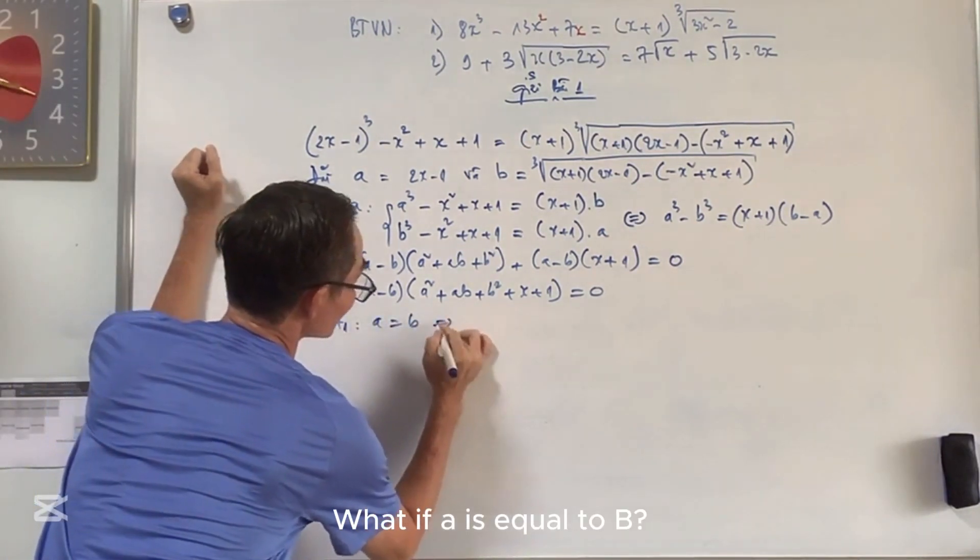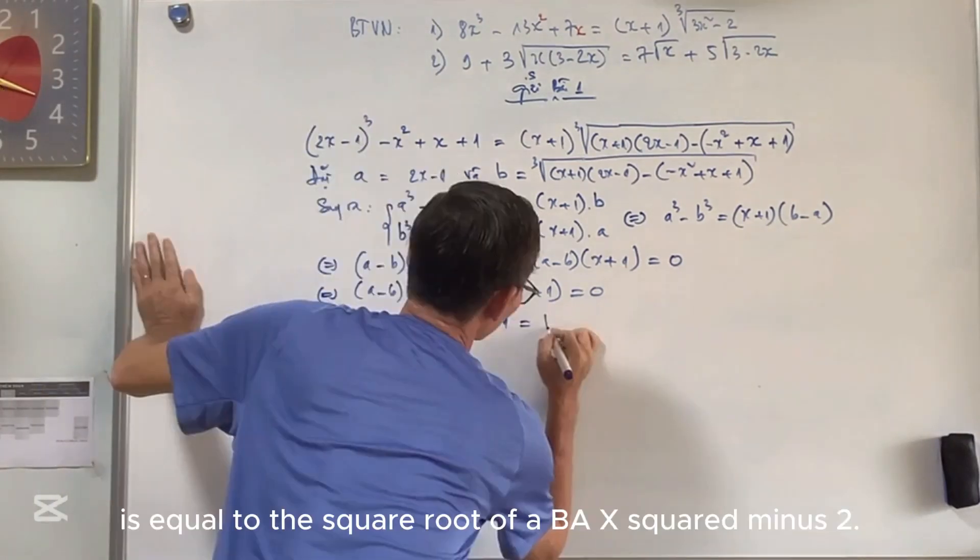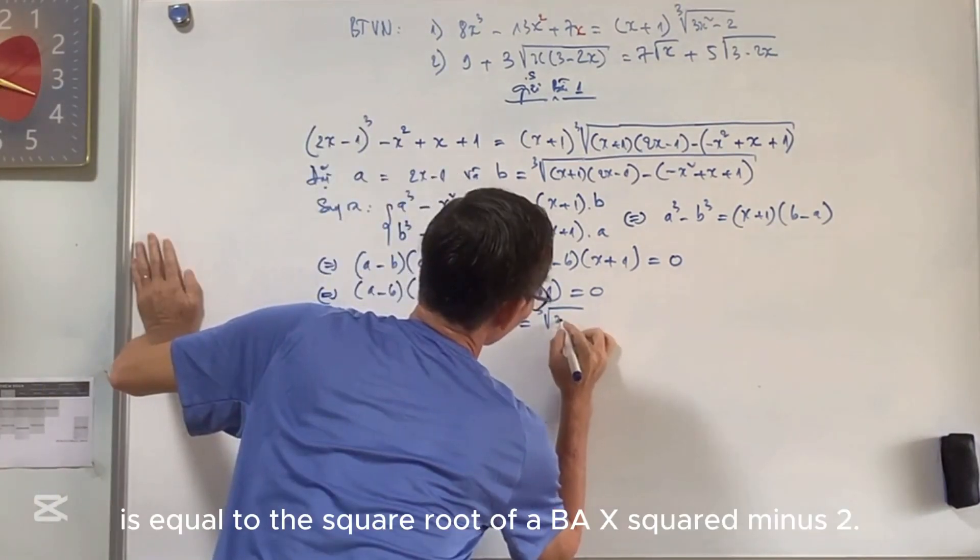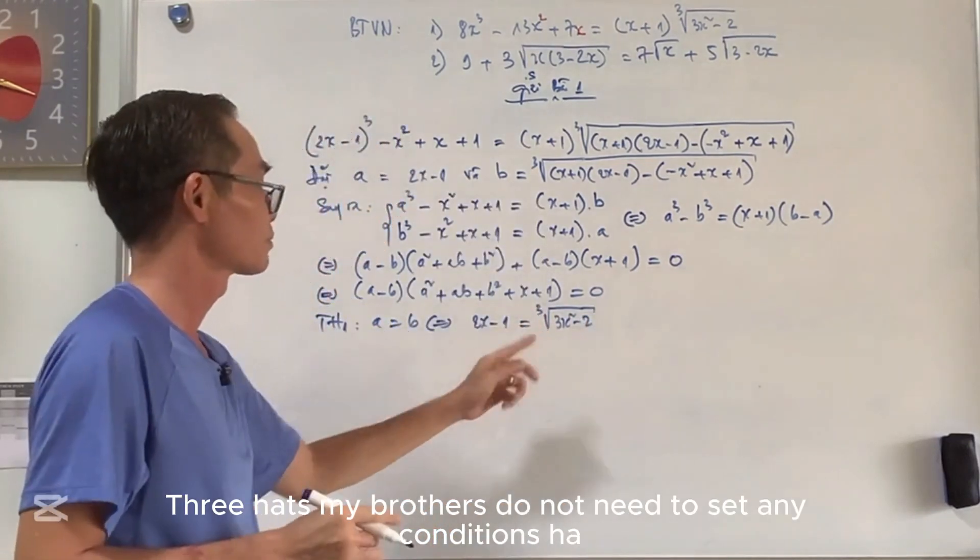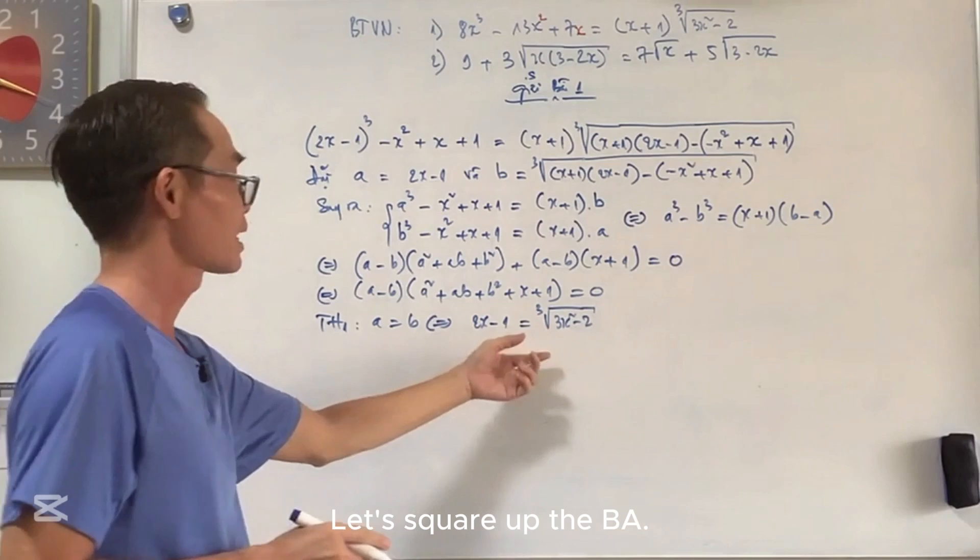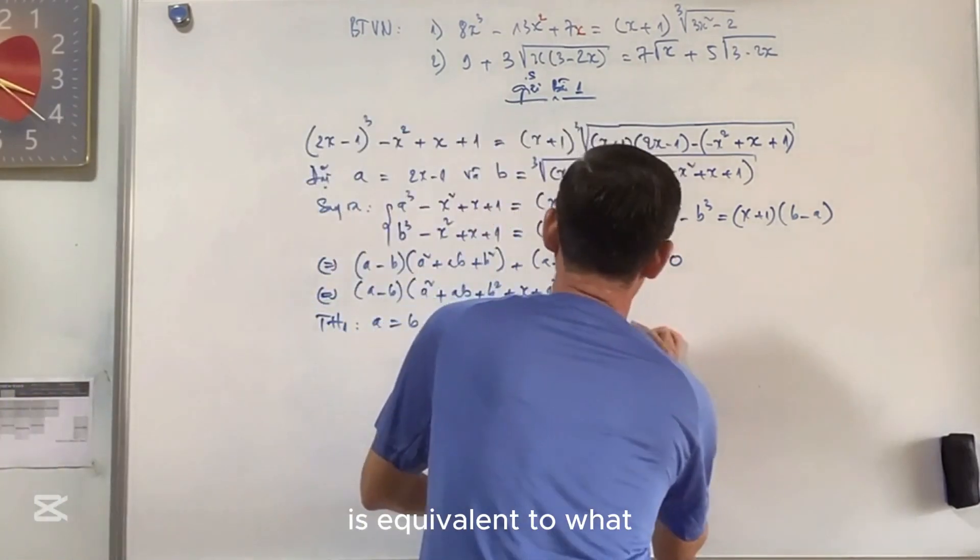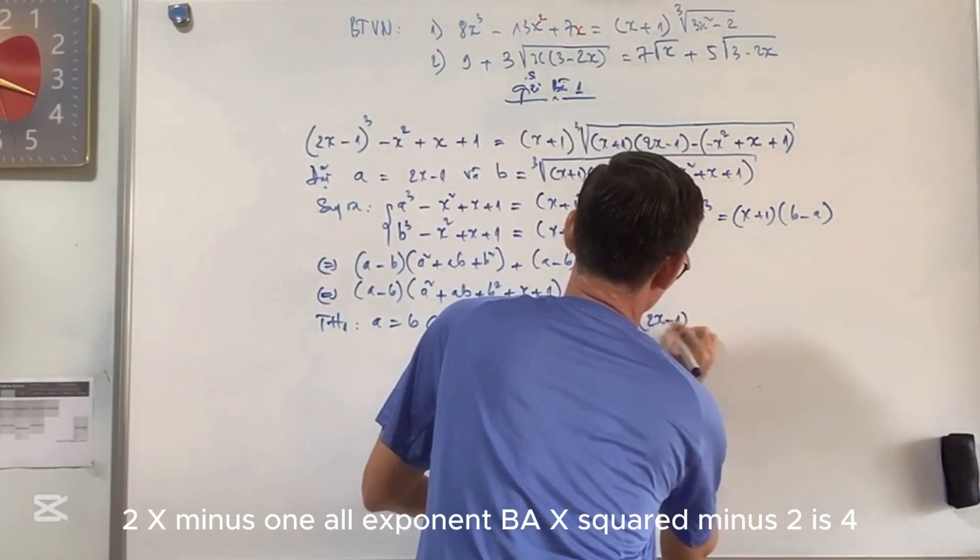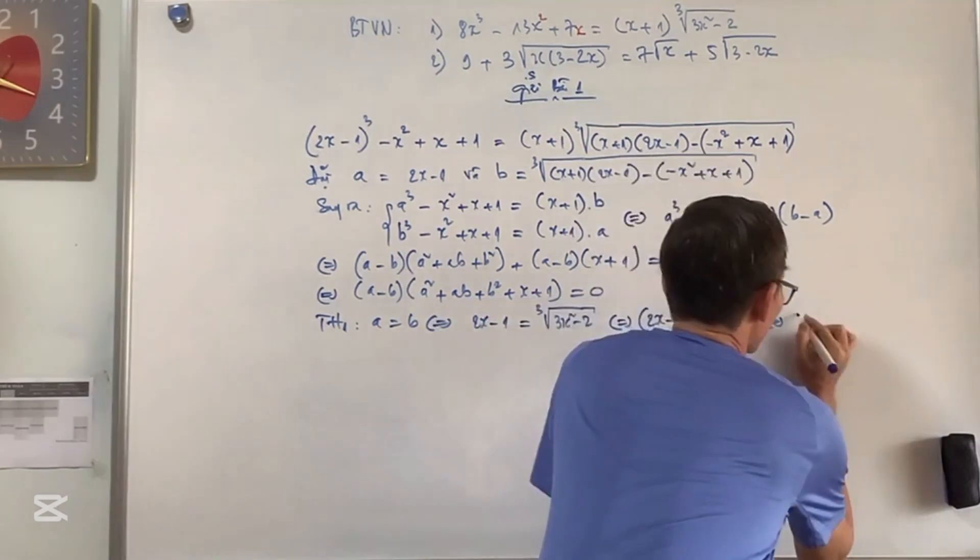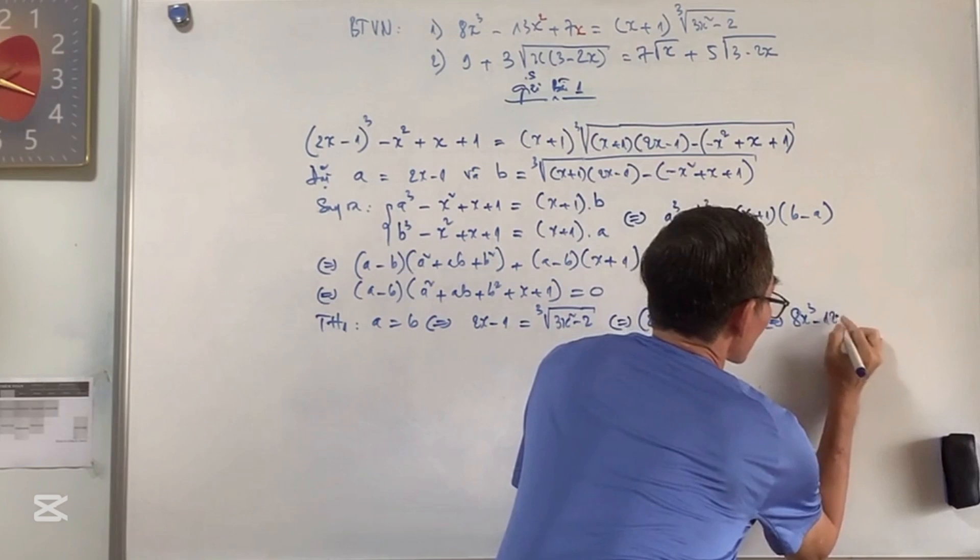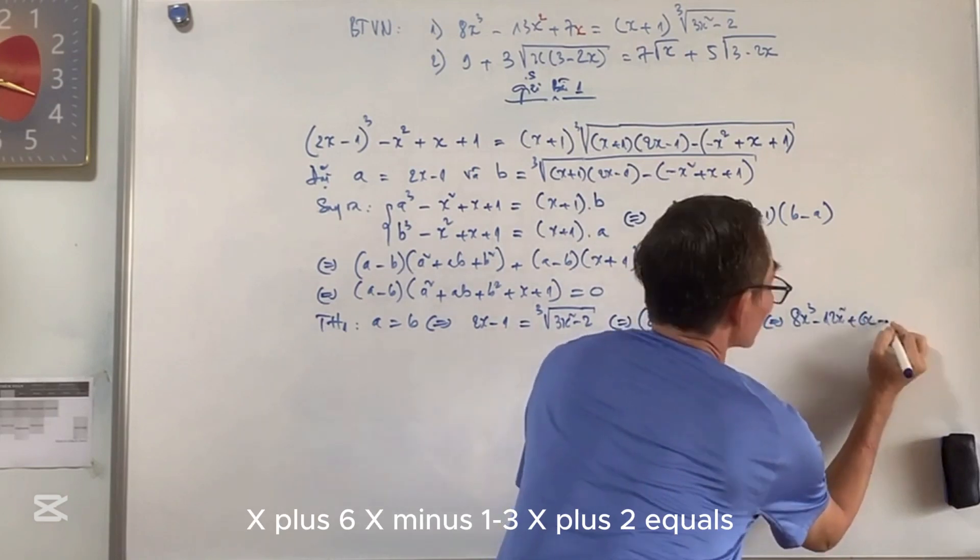The first case. What if a is equal to b? So this is 2x minus 1 equals the square root of x squared minus 2. This is simple. My brothers do not need to set any conditions. Let's square it. Is equivalent to what?